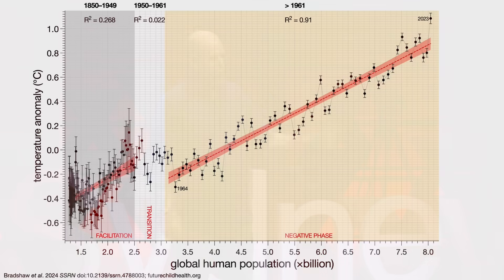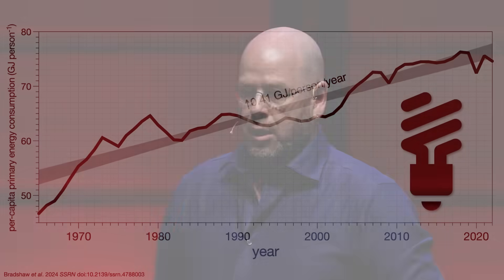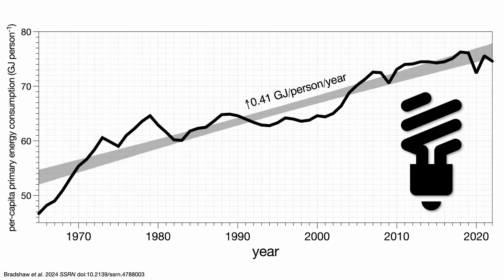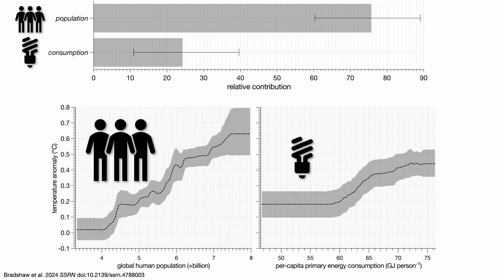Now, climate change. This is the temperature anomaly — the additional temperature beyond the baseline normal. If we place this into our three different phases, the tightest correlation is during the negative phase, when we crossed the line into more than one Earth. So every increment in human population size means we get more climate change. Climate change isn't just a product of the number of people, though, because our per capita consumption is also increasing. Since the late 1960s, we've been increasing our average global per capita rate of consumption by 0.41 gigajoules per person per year. When you use machine learning models to determine what is contributing most to that climate change signal, it turns out that human population size drives most of that relationship, and to a lesser extent, the consumption increase.